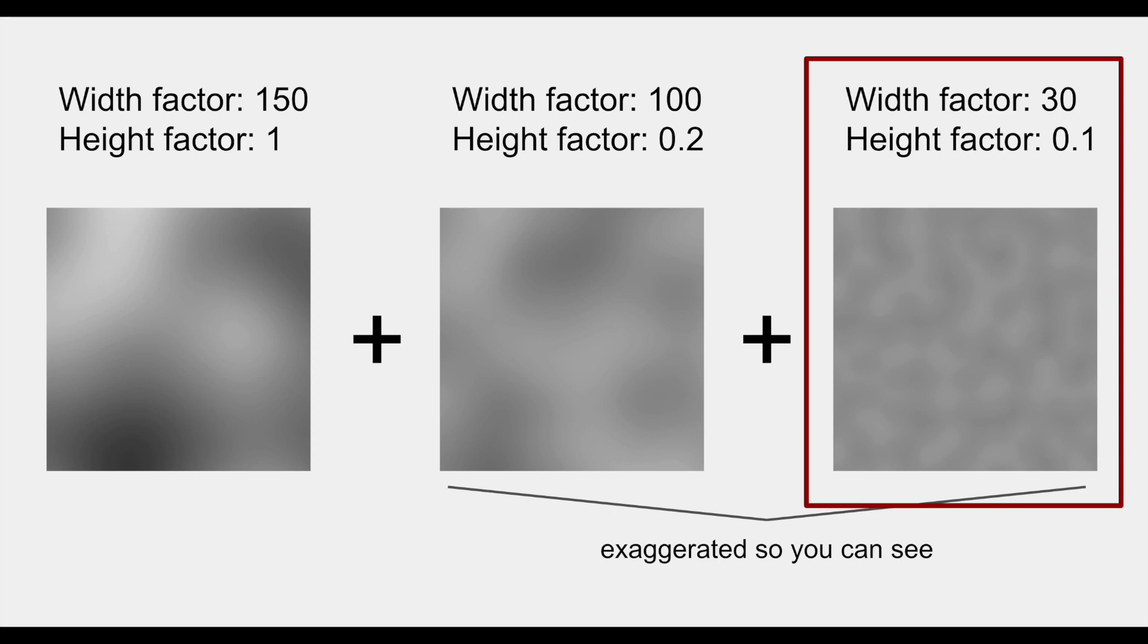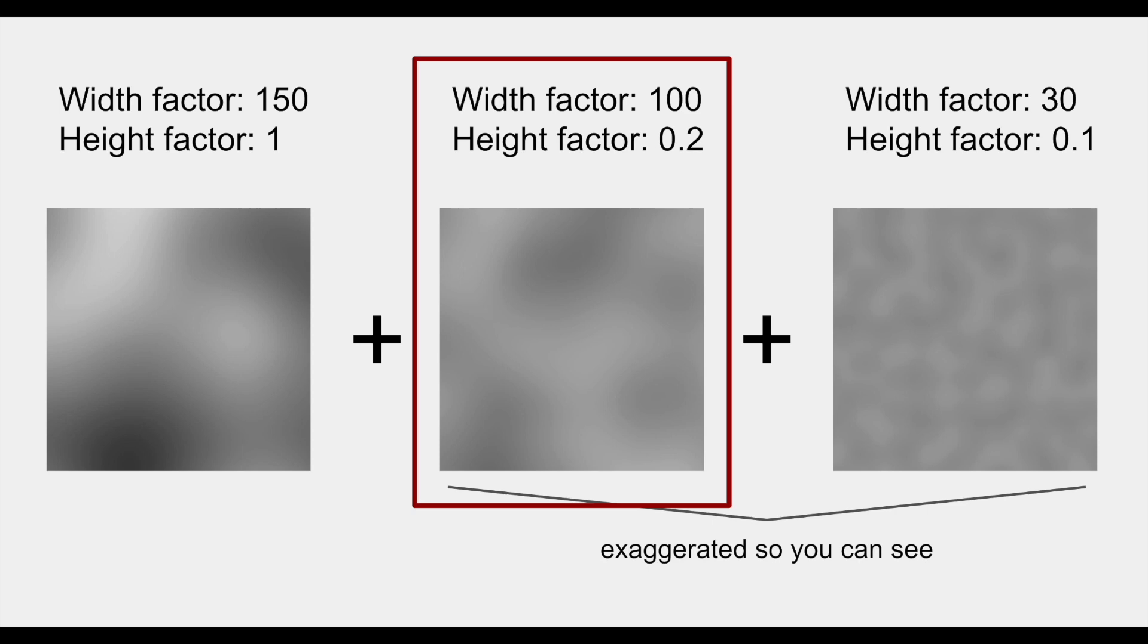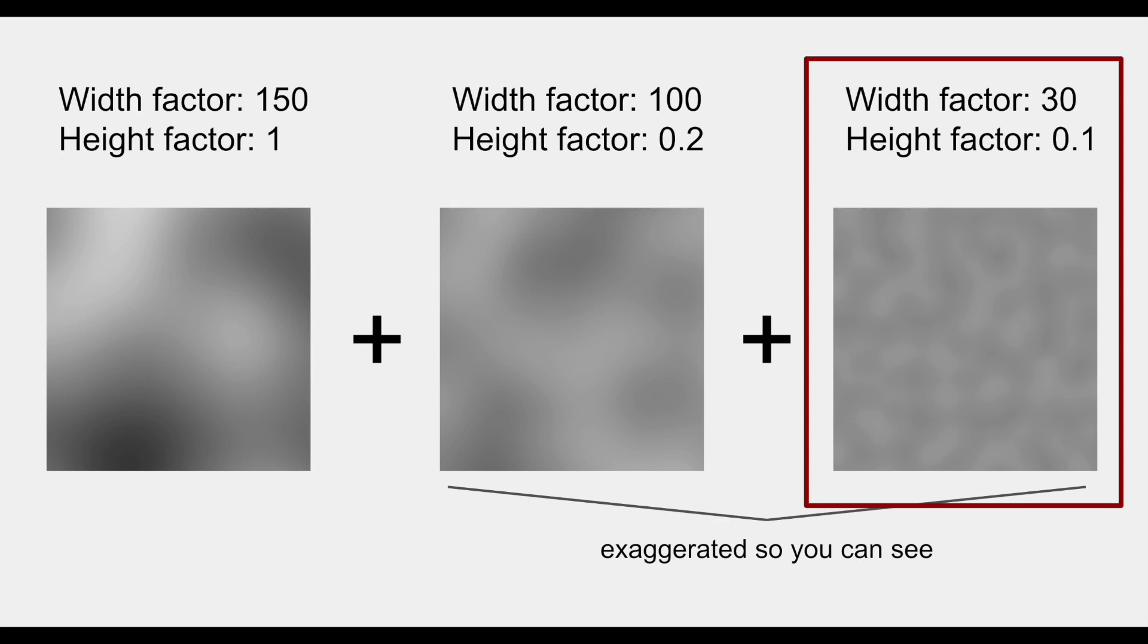Additionally, the layers get less tall as they get less wide. The height of the second layer is multiplied by 0.2 before being added to the layer sum, and the height of the third layer is multiplied by 0.1. This creates the blurry height map I showed you earlier, which is perfect for terrain generation.